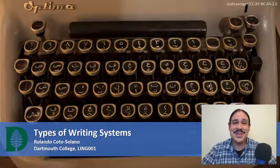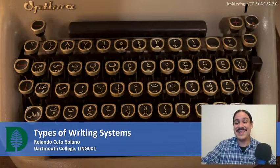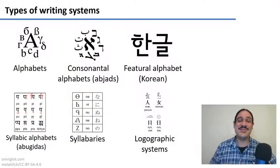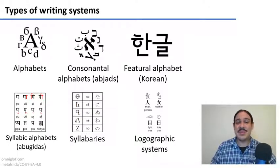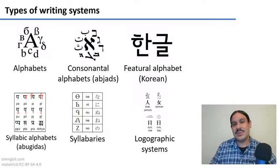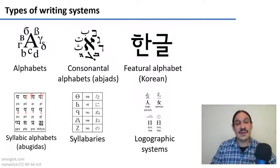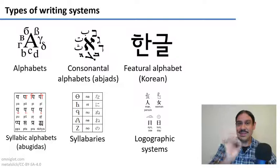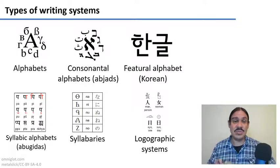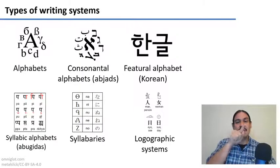This is one of my favorite topics in the whole class because I really like writing systems. In this video we're going to look at different types of writing systems for the languages of the world: alphabets with consonants and vowels, consonantal alphabets like Arabic and Hebrew, featural alphabets like Korean, abugidas where the consonant is primary and the vowel is secondary, syllabaries like Cherokee and Japanese, and logographic systems like Egyptian and Chinese where a drawing represents a word.